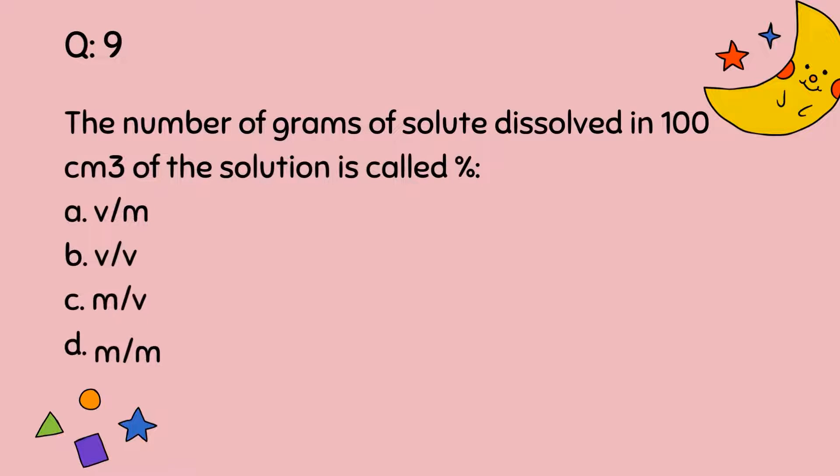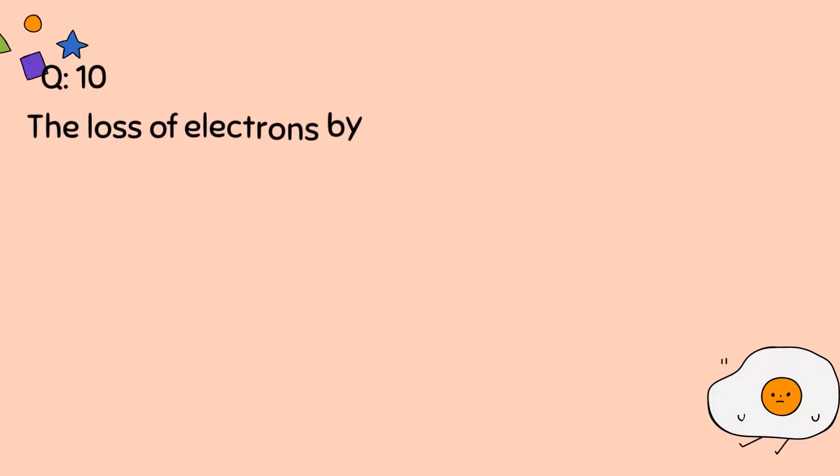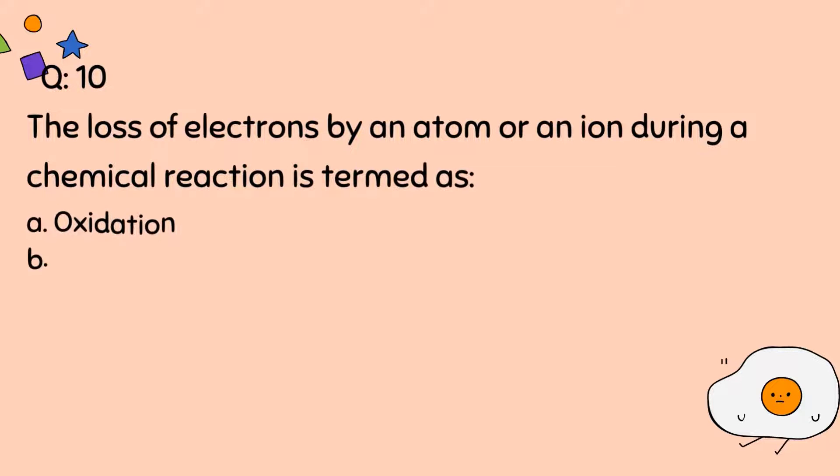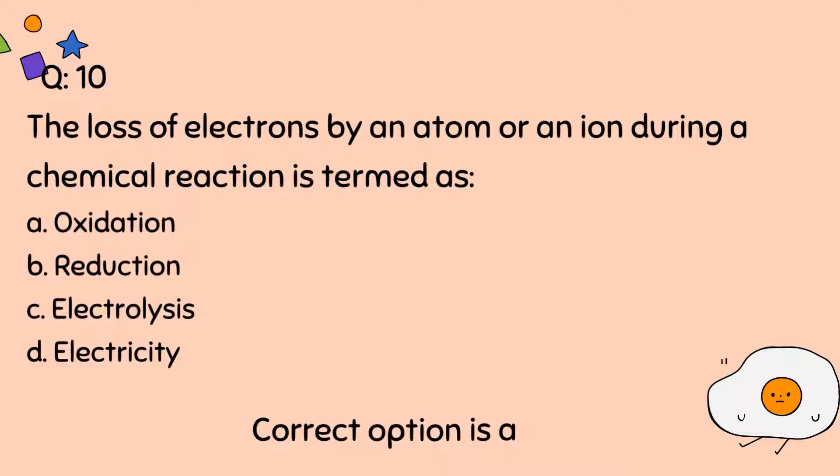Question number 9. The number of grams of solute dissolved in 100 cubic centimeter of the solution is called: A, Volume by Mass, B, Volume by Volume, C, Mass by Volume, D, Mass by Mass. Correct option is C. Question number 10. The loss of electrons by an atom or an ion during a chemical reaction is termed as: A, Oxidation, B, Reduction, C, Electrolysis, D, Electricity. Correct option is A.